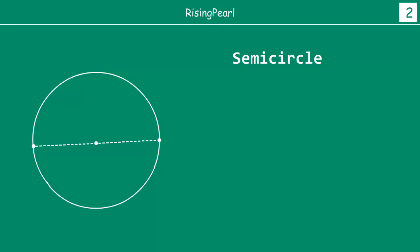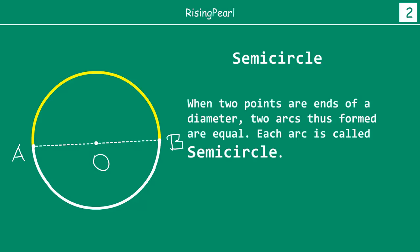Now in this case, we have taken the same circle with center O, and the two points we have taken are actually the endpoints of a diameter. We saw that a diameter is nothing but a chord that passes through the center of a circle. With points A and B on opposite sides of a diameter, the minor arc and the major arc are actually the same length. So each of these parts is called a semi-circle.